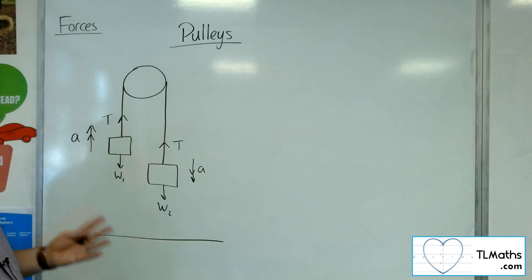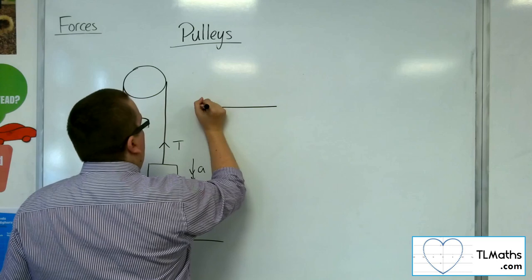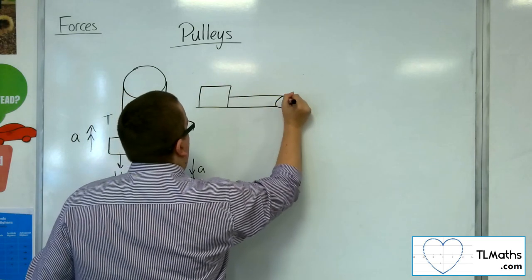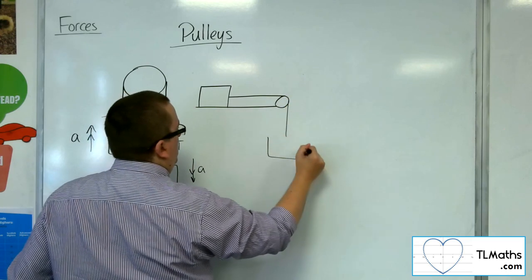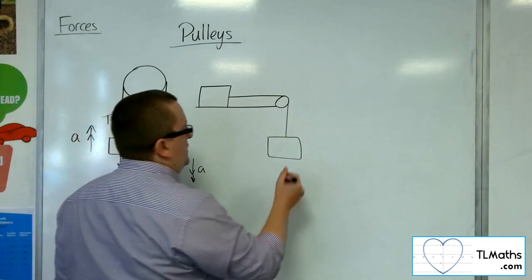An alternative diagram that you could incorporate here is one of the particles being on a tabletop, and it is connected by string around a pulley, and over the top, over the side of the table, is another particle.